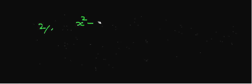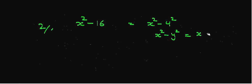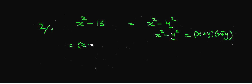The second example: we have to factorize x² - 16. Now, 16 can be written as 4². We know the identity that x² - y² = (x + y)(x - y). So in this expression, in place of y we have 4. This gives us (x + 4)(x - 4). That is, x² - 16 has two factors: x + 4 and x - 4.